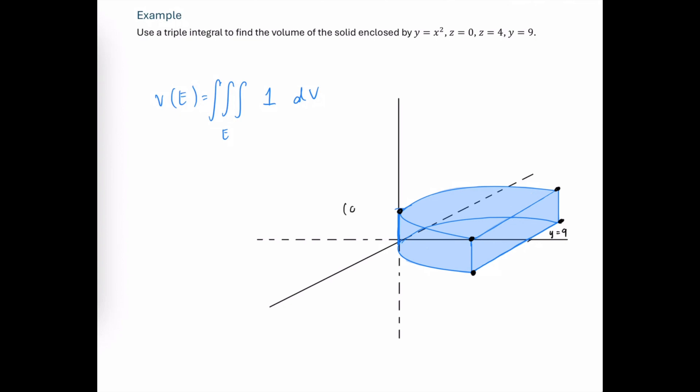This vertex point up here is going to be (0, 0, 4). And out here when y equals nine, that's going to happen when x equals plus or minus three. So we have (3, 9, 0).